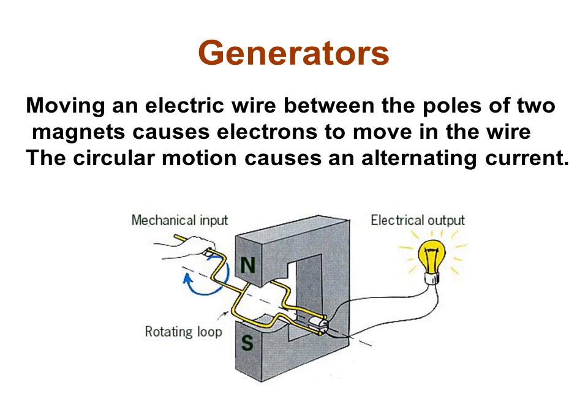Here we have a little diagram that shows a mechanical input, a rather primitive one, and then we have a rotating loop in a magnetic field between the north and south pole of this magnet, and we get electricity and the light of a light bulb.